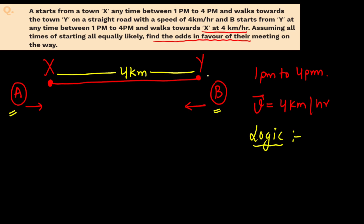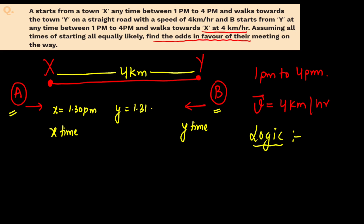A is travelling towards town Y and B is travelling towards town X. Let's say X is the time at which A leaves and Y is the time at which B leaves. For example, X could be 1:30pm and Y could be 1:31pm.